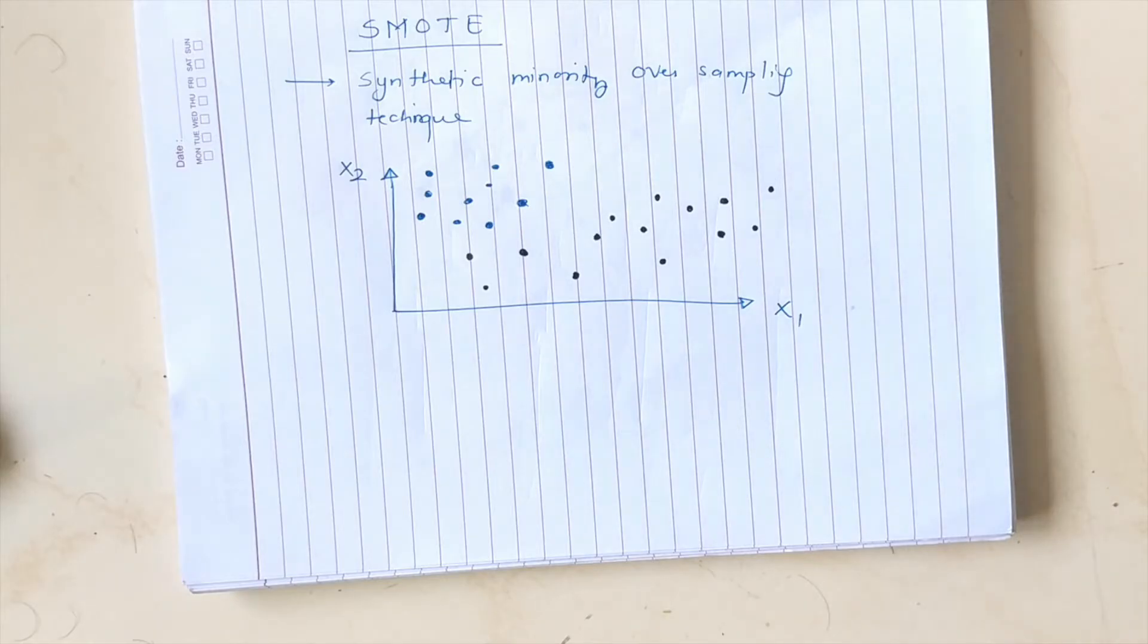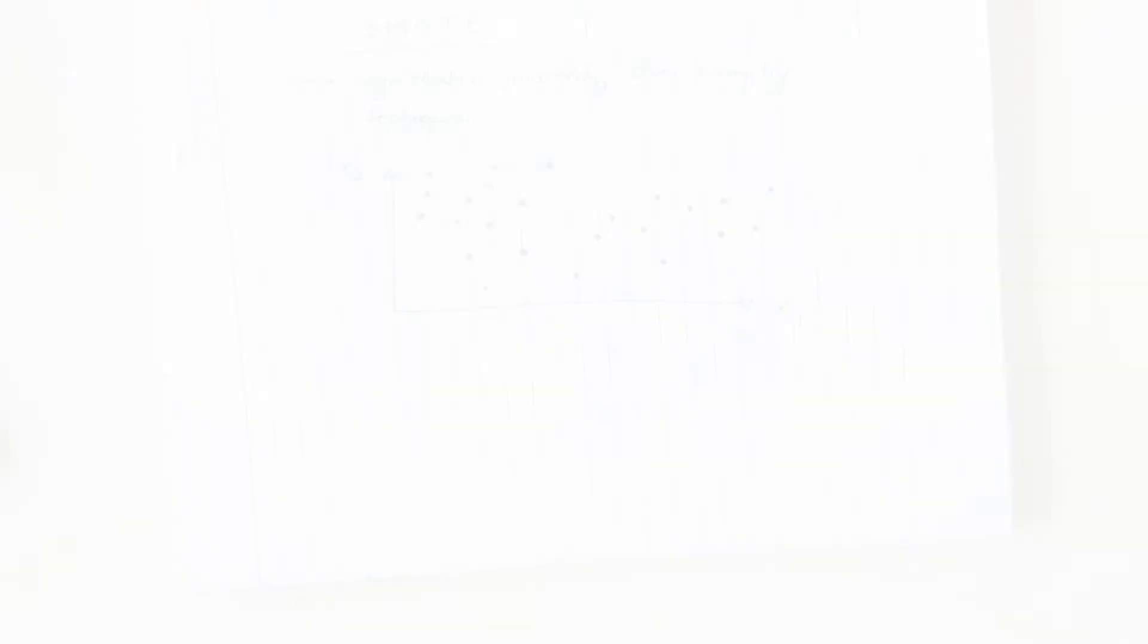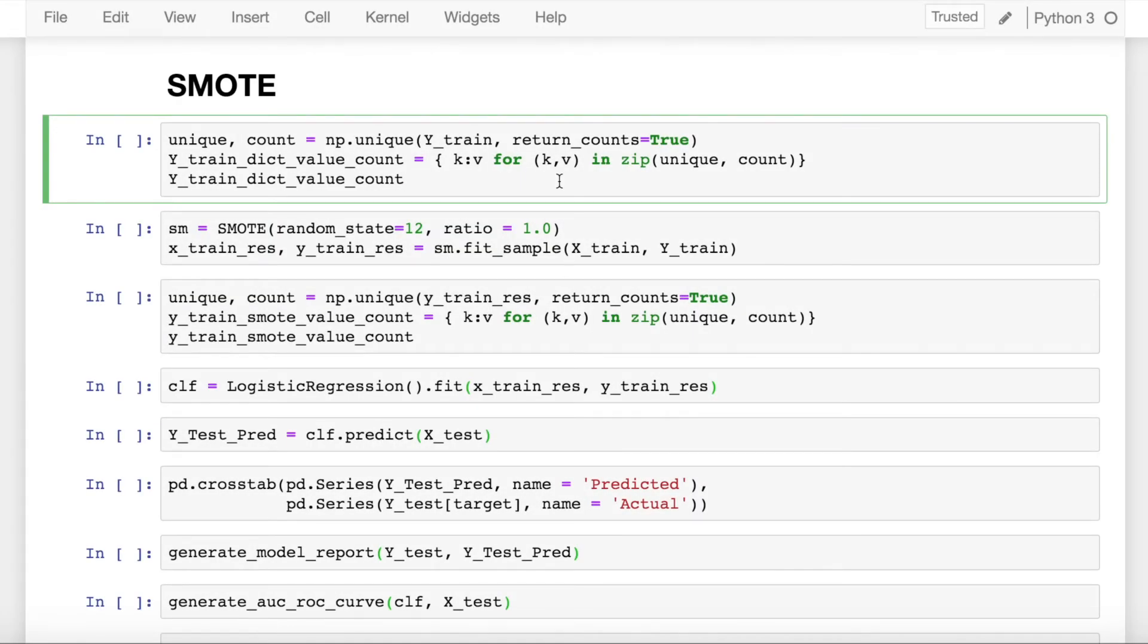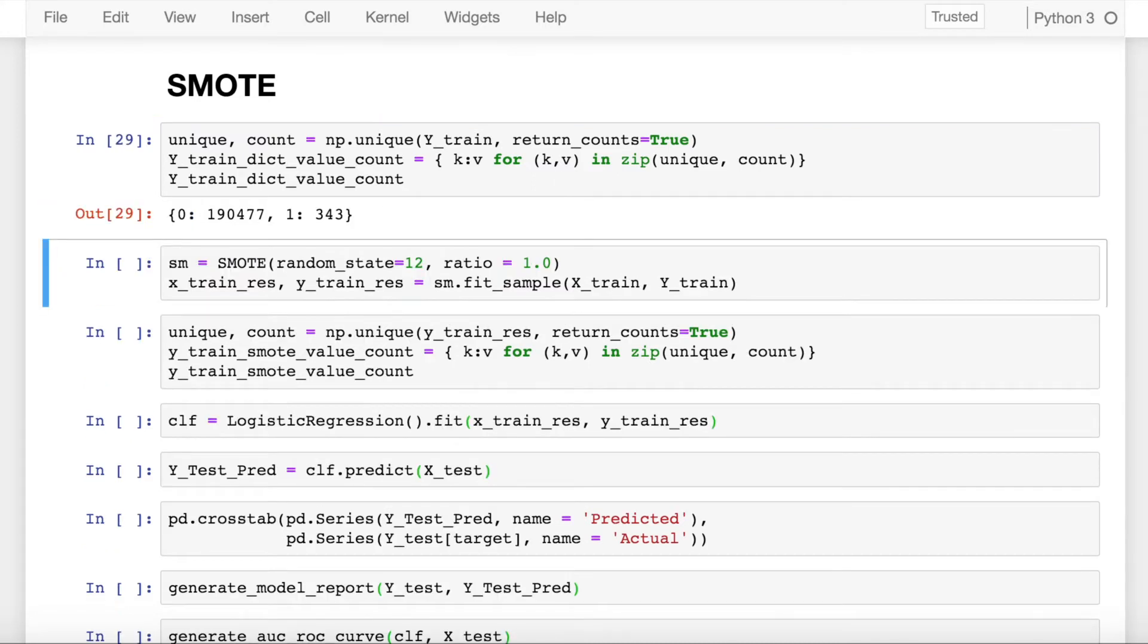Let's now write code for implementing SMOTE using Python. Now that we're clear on the concept of how SMOTE works, let's now write code for implementing SMOTE for oversampling. We're still referring to the same dataset where I had some features and a target variable. I split that features into X train, X test, Y train and Y test.